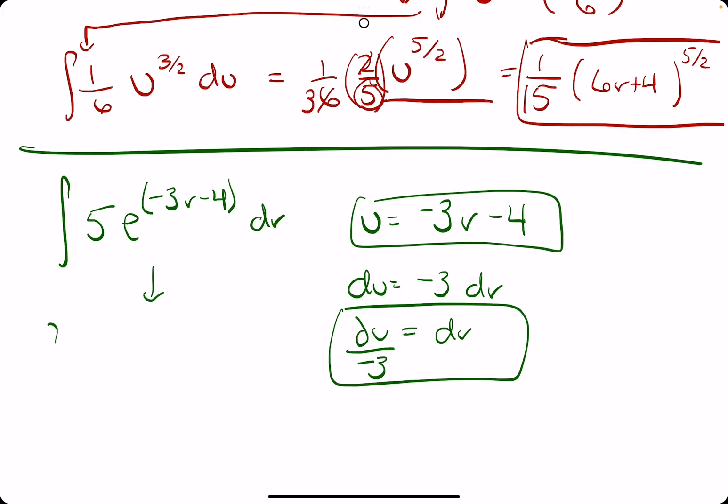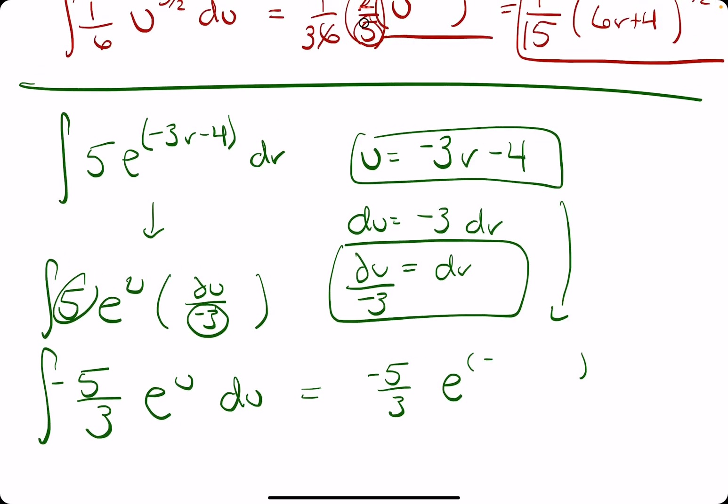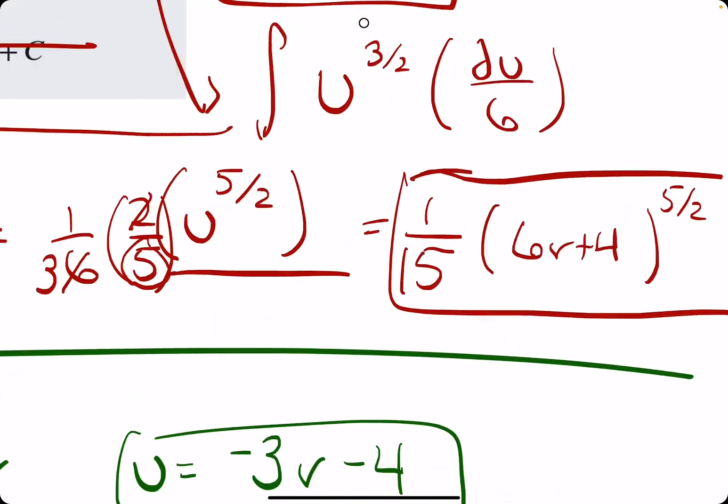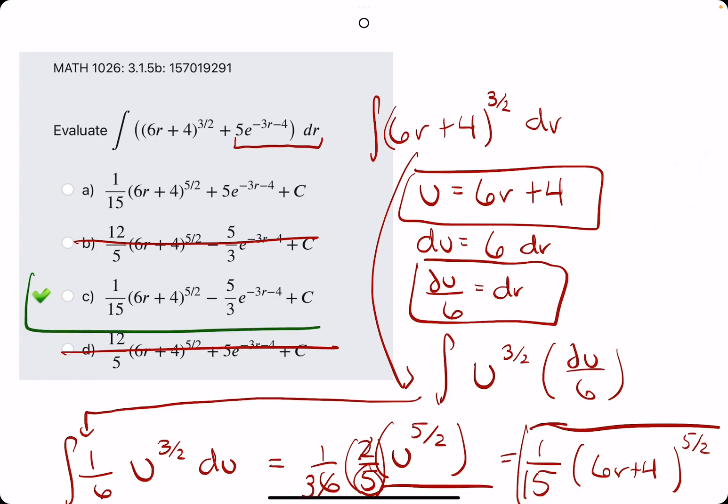We rewrite this integral. Keep the 5. We have e to the u. Replace the dr with du over negative 3. We kind of group our coefficients. So we have negative 5 over 3, e to the u, du. The integral of e to the u is just e to the u. The antiderivative of e to the u is just e to the u. And then the negative 5 thirds just stays where it is. So negative 5 thirds would likely tell us our answer right away. But let's go ahead and sub back in the u. Negative 3r minus 4. And on this piece we'll tack on the plus c since we didn't do it with the first one. So we want this with the 1/15. We want this with the negative 5 thirds out in front.